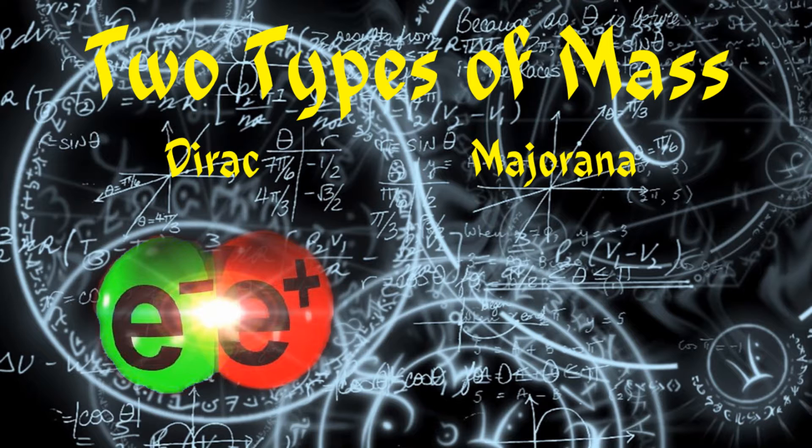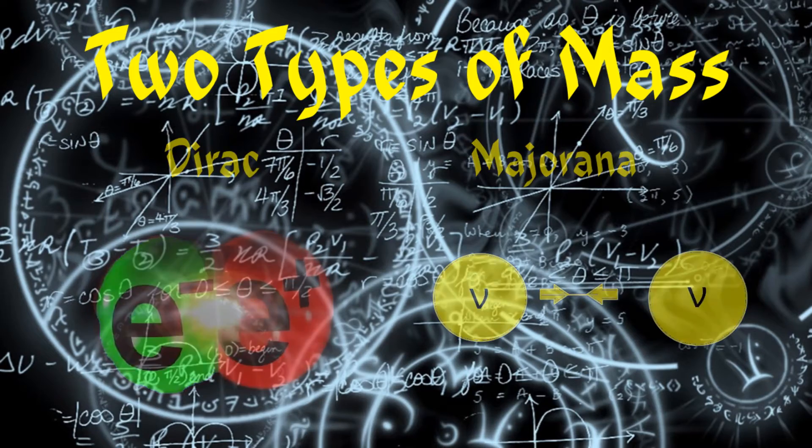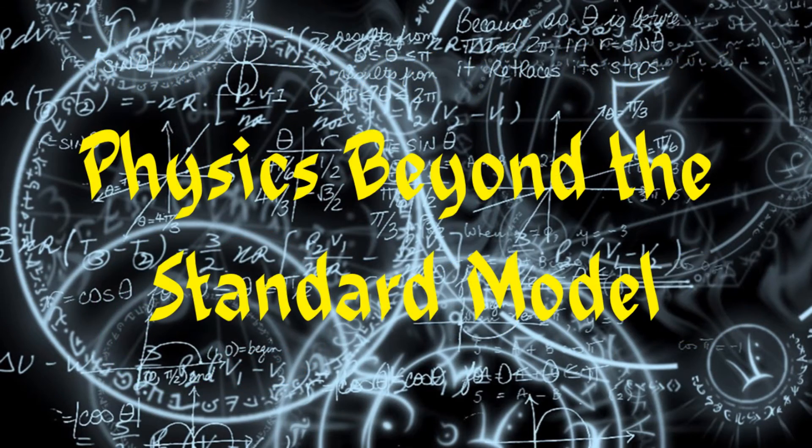It has Dirac mass, but a Majorana fermion is its own antiparticle. It sounds ridiculous, I know. That's why the standard model doesn't contain this. It requires new physics beyond the standard model.